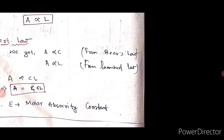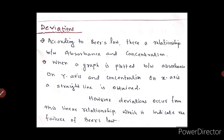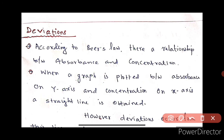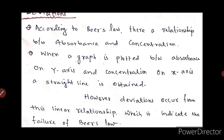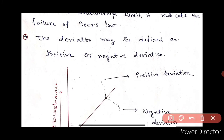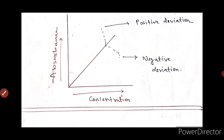Next, we have to see the Deviation of Beer's law. Deviation means a change in path. In Beer's law, the absorbance-concentration relationship — if the path changes, this is called Deviation. Deviation in Beer's law means the failure of Beer's law. The deviation may be defined as positive or negative deviation. So let's see the graph and we will understand properly.